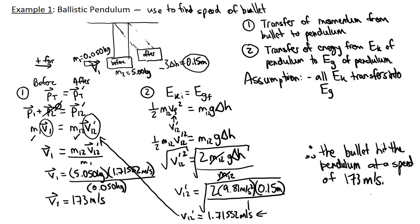You could also say it's 173 meters per second forwards if the question asks for velocity. To summarize: we recognized two things — the transfer of momentum from bullet to pendulum, and the transfer of energy from kinetic to gravitational potential. We solved one piece and plugged it into the other equation. This is often called the muzzle velocity of the bullet.